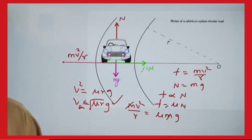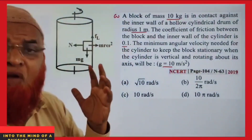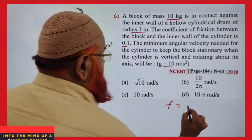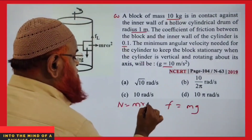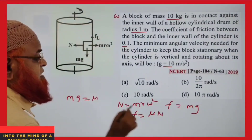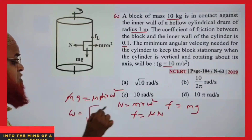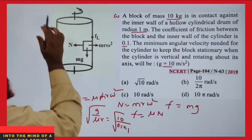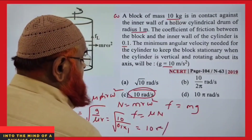This is a previous year question from 2019: a block is fixed inside a rotating drum with angular velocity ω. Centrifugal force = mrω² provides normal reaction N = mrω². Friction balances mg: μN = mg, so μmrω² = mg, m cancels giving ω = √(g/μr). With g=10, μ=0.1, r=1: ω = √(10/0.1) = √100 = 10 radians per second.